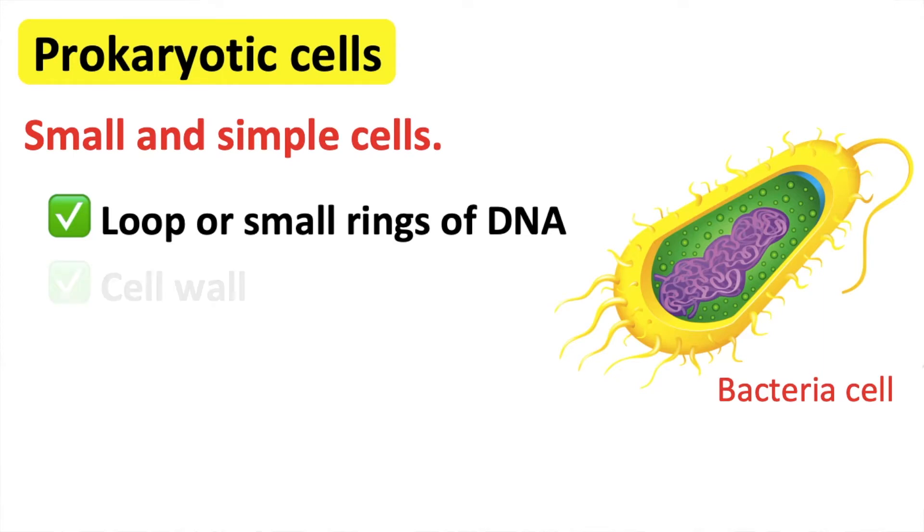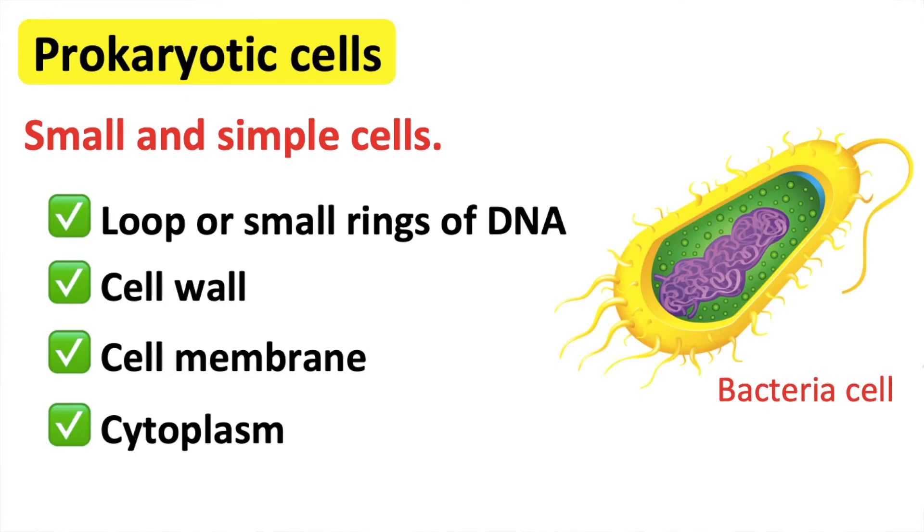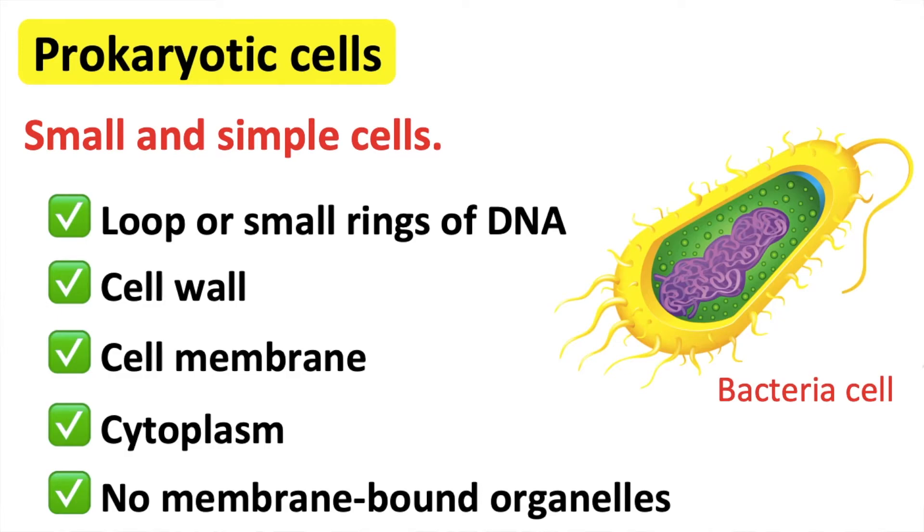They also have a cell wall, cell membrane, cytoplasm but no membrane-bound organelles. Bacteria is an example of a prokaryote. Prokaryotes are unicellular organisms. This means that they are single-celled.